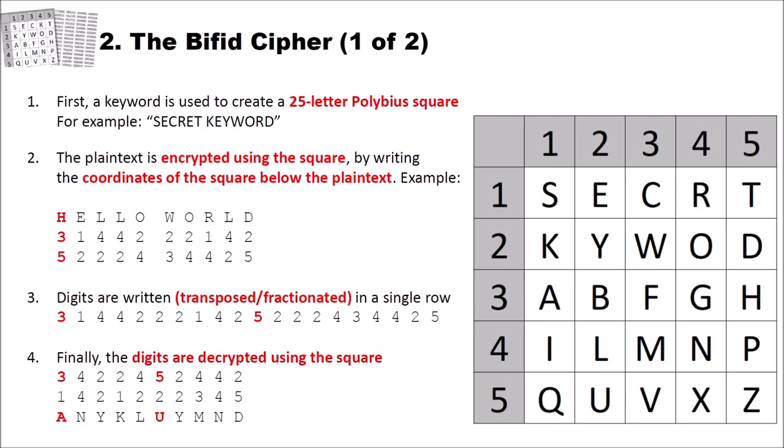In the second step, the plaintext is encrypted using the square by writing the coordinates of the square below the plaintext. Here is an example. Let's assume we want to encrypt "hello world." So you first write your plaintext here. And then you look up all the letters in the square. For instance, the H here is at coordinates 3,5. Here is our H, so you write 3,5. Then you have the letter E, and the letter E is at the position here, 1,2 is the letter E. And you continue doing so until you have written all the coordinates below your plaintext.